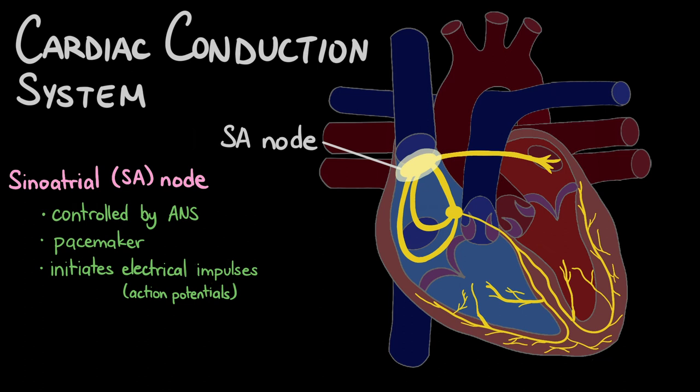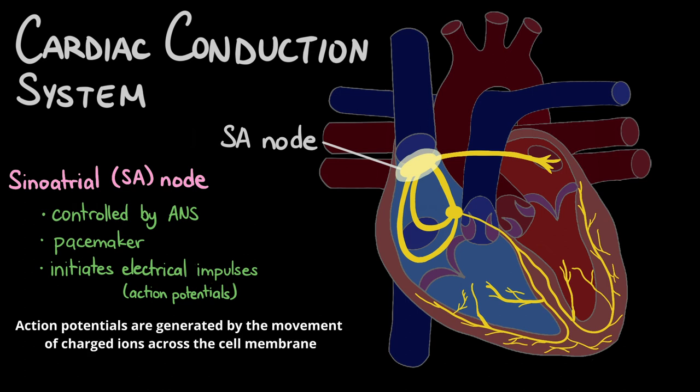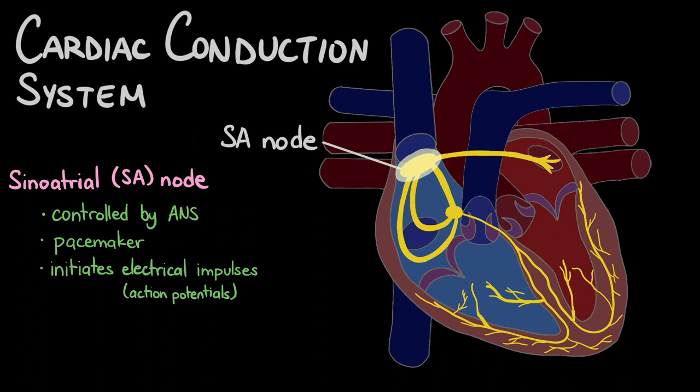These electrical impulses, also known as action potentials, are generated by the movement of charged ions across the cell membranes of the SA node cells. These cells produce roughly 60 to 100 action potentials every minute.